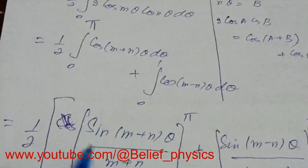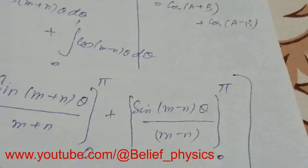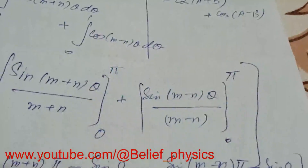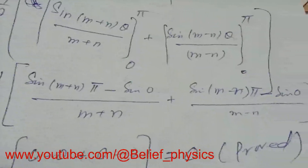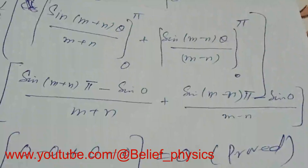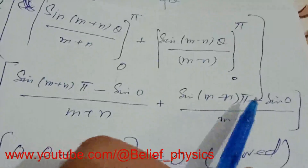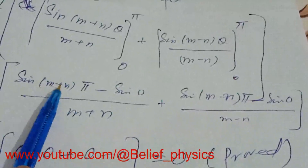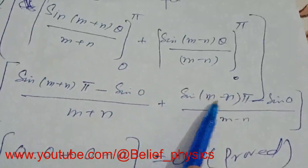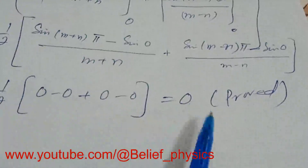Integrating, the first term gives sin((m plus n) theta) divided by (m plus n), and the second gives sin((m minus n) theta) divided by (m minus n), evaluated from zero to pi. Putting in the upper limit pi: sin((m plus n) pi) is zero since it is a multiple of pi, and sin(0) is also zero. Similarly the second term gives zero. So the result is one half times zero, which equals zero.